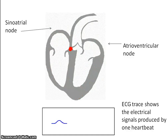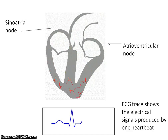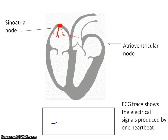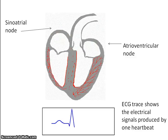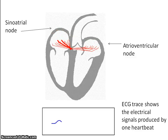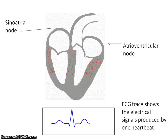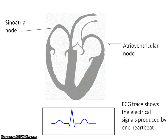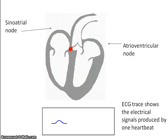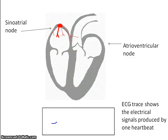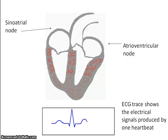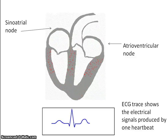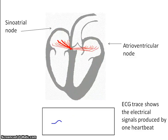Here's an animation showing that pathway of electrical activity, starting at the SAN, contracting the atria, moving down the septum into those specialized fibers. You can see the ECG trace below, showing those electrical signals which we'll be talking about in a moment.